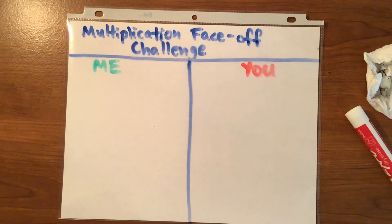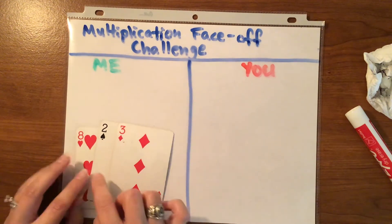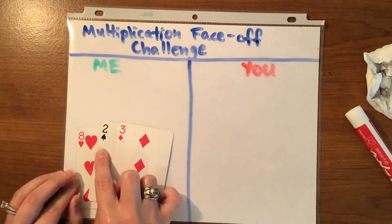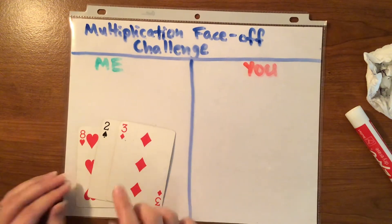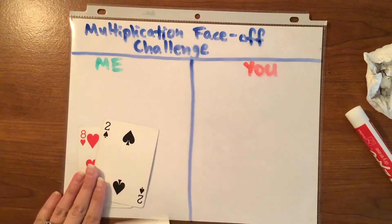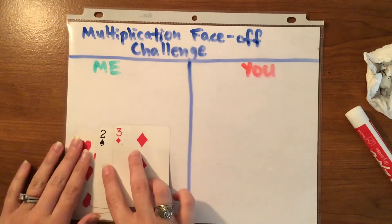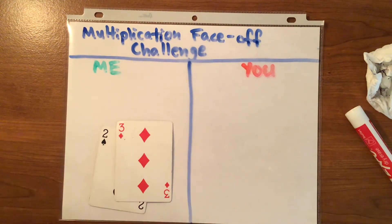So multiplication face-off, you're going to look for the larger product. You're going to draw three cards this time with the challenge. So drew an eight, a two, and a three. Up to you on how you decide to multiply. You can do eight times two, then multiply that answer times three. Two times three, multiply that answer by eight. Or eight times three, and then double it in the end.